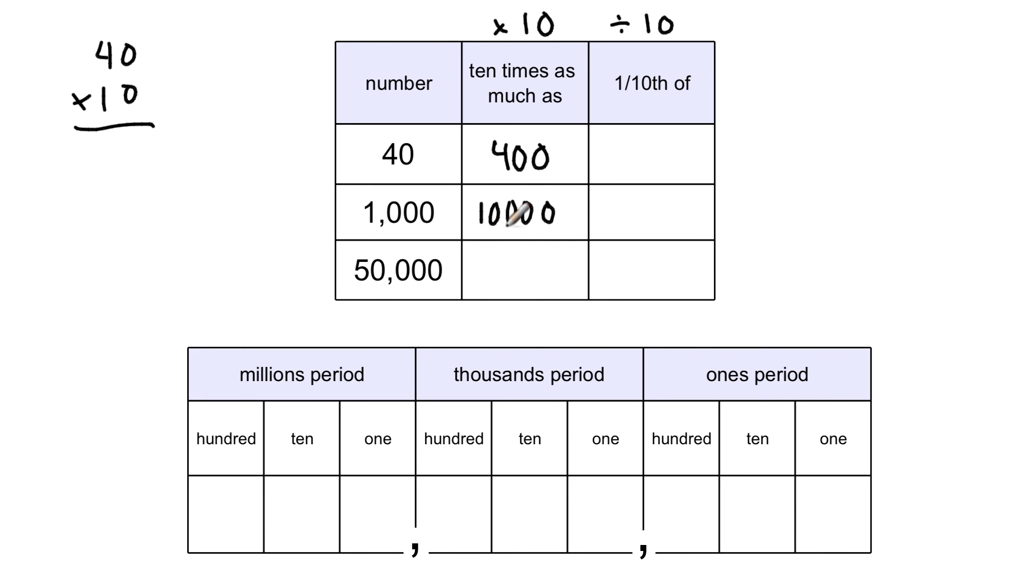The comma goes after three digits, so it would go there. Now fifty thousand multiplied by ten is taking fifty thousand, that's five with one, two, three, four zeros, and then writing another zero because I'm multiplying it by ten. And then I would count three over, put the comma in there. So multiplying by ten is super easy. Just write another zero on the end of the number.